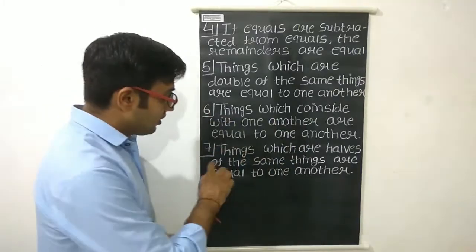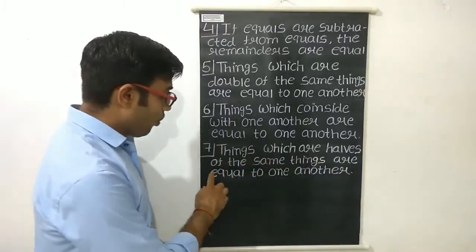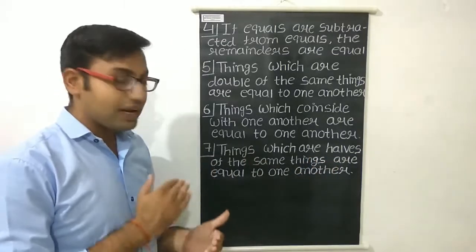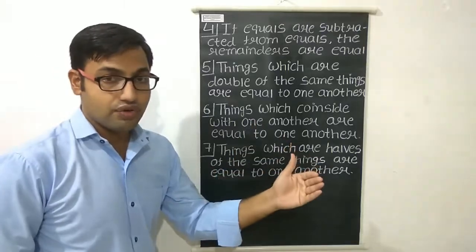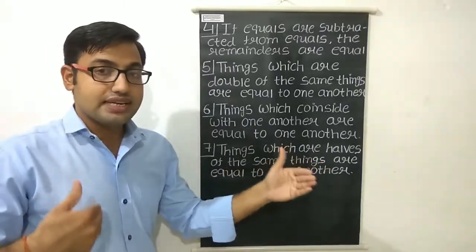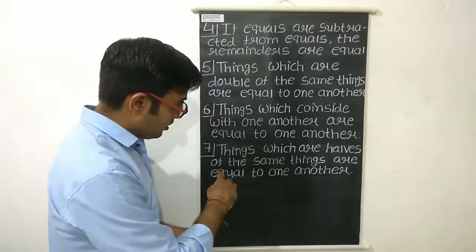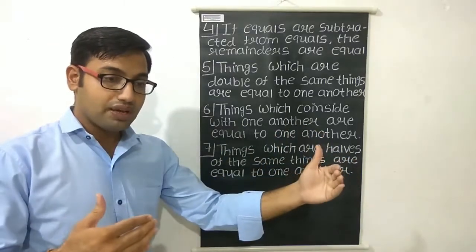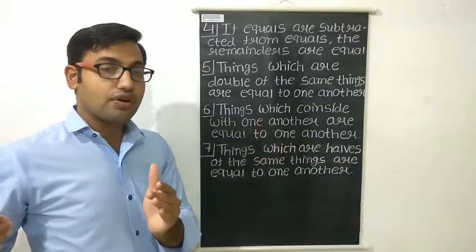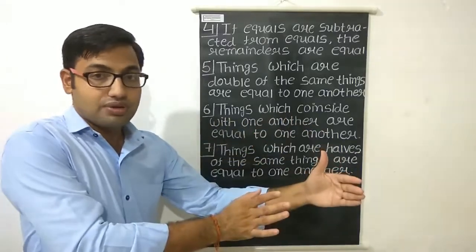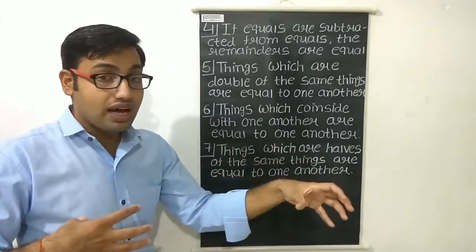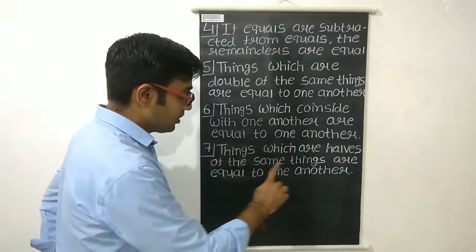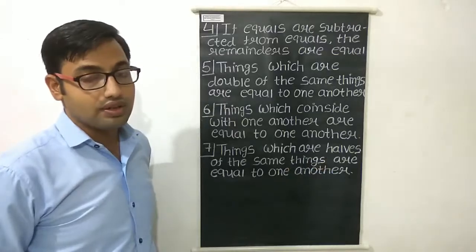The seventh axiom is: things which are halves of the same things are equal to one another. Halves means to divide by two. Suppose we have six liters of water on both sides — the same things. If we take half the water from each side, we get three liters remaining on each side. Both are three liters, so both are equal again.